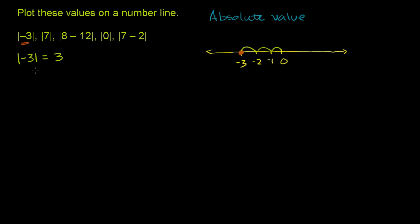That's the conceptual way to imagine absolute value — how far are you away from 0? But the easy way to calculate it: whether it's negative or positive, the absolute value is always going to be positive. Absolute value of negative 3 is positive 3. Absolute value of positive 3 is still positive 3. You always get the positive version of the number.